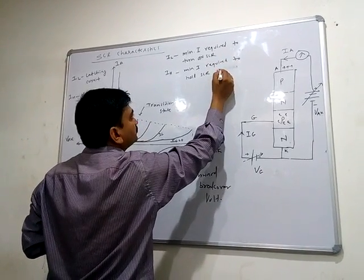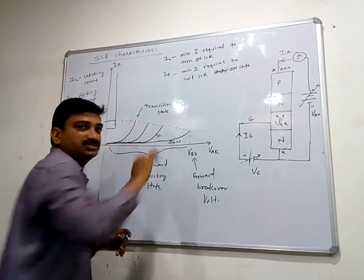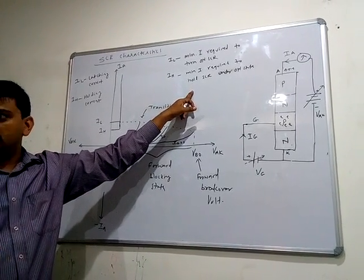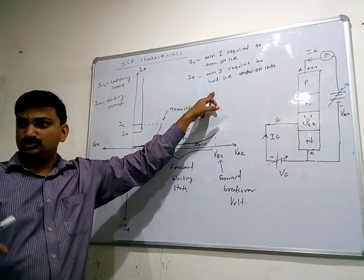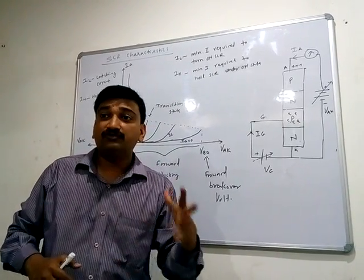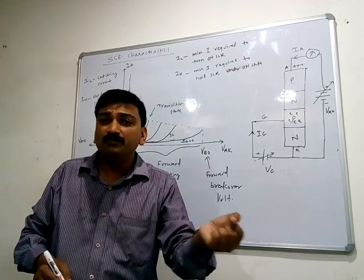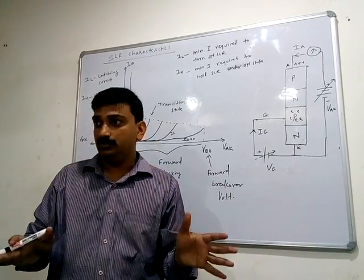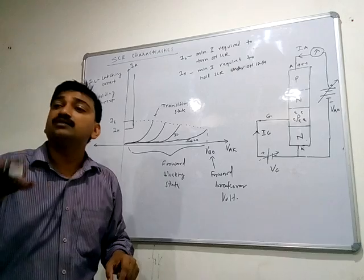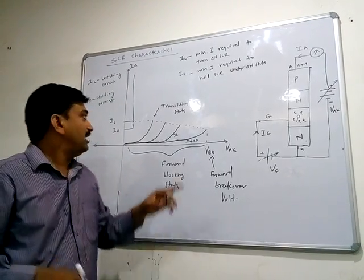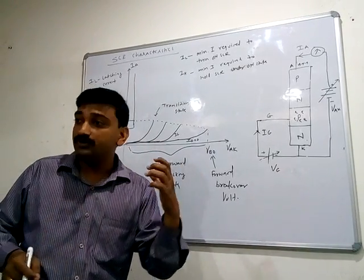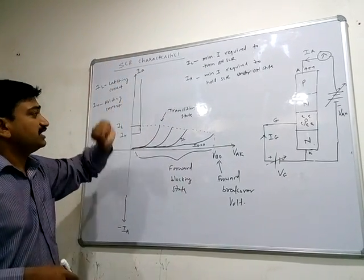Just like a two-wheeler: initially you need a minimum fuel supply to turn on the engine, and after the engine starts you need some minimum fuel supply to maintain its on state. Similarly, latching current IL is the current required to turn on the SCR, and holding current IH is the current required to hold or maintain the SCR in the on state.